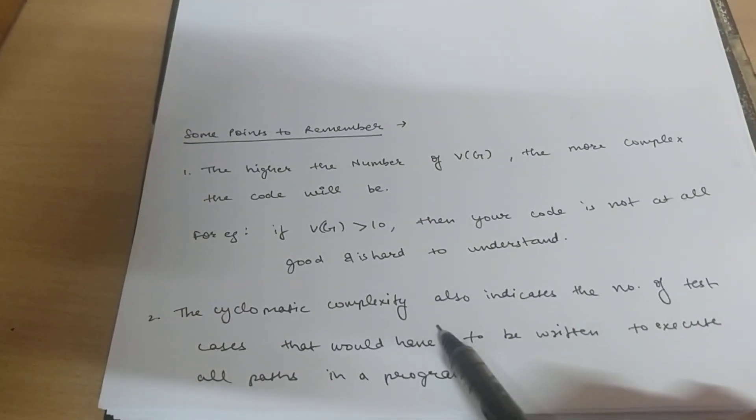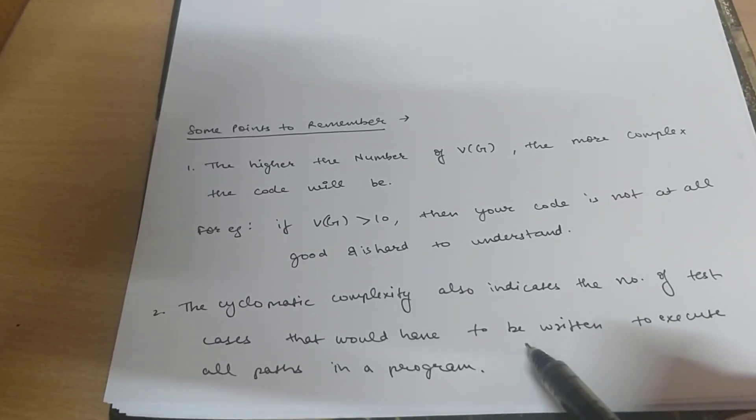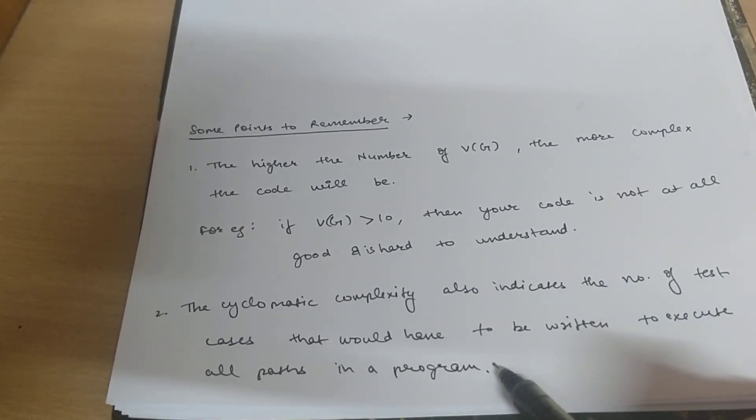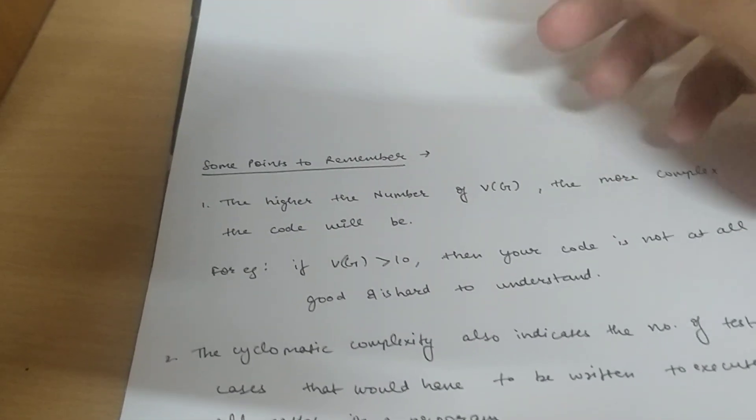Second point. Cyclomatic complexity also indicates the number of test cases that would have to be written to execute all the paths in a program. You can determine all the test cases based on this Cyclomatic complexity.